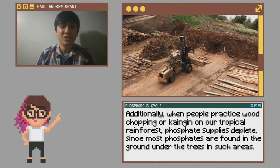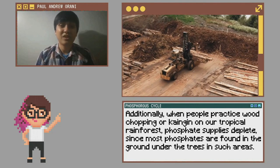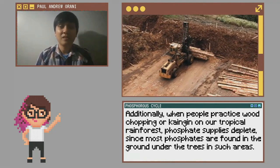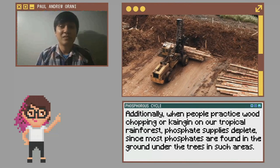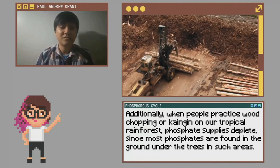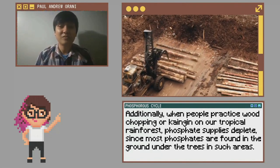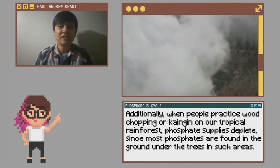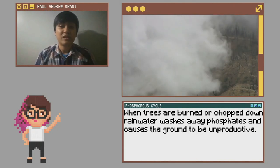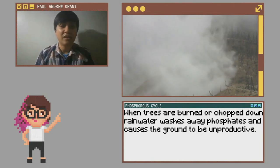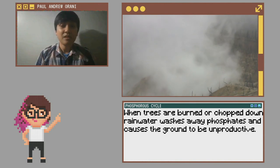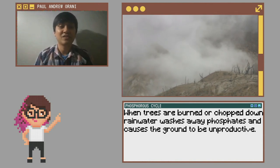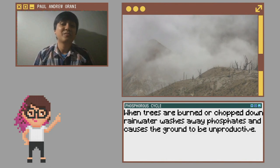Additionally, when people practice wood chopping or kaingin on our tropical rainforests, phosphate supplies become depleted since most of the phosphates are found in the ground under trees in such areas. When trees are burned down or chopped down, rainwater washes away phosphates and causes the ground to be unproductive.